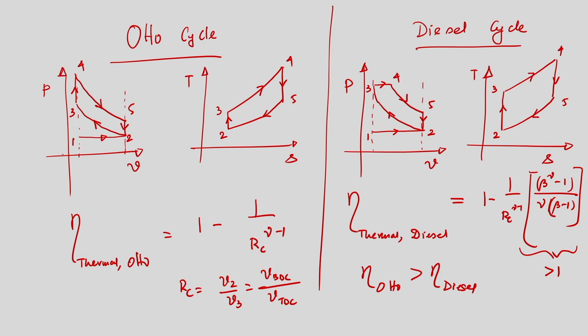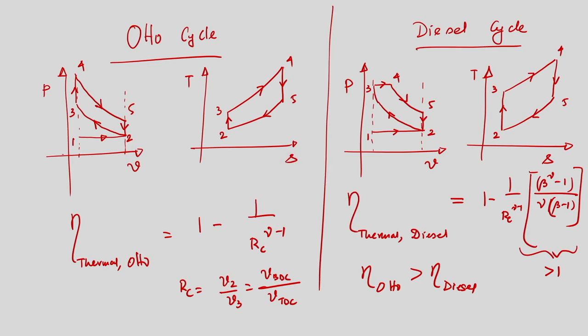Since that quantity is always greater than 1, for a fixed compression ratio the efficiency of the Otto cycle will be higher than the efficiency of the Diesel cycle. Constant volume combustion is more efficient than constant pressure combustion. However, CI engines are operated at a higher compression ratio, so efficiency will be higher for compression ignition engines despite the constant pressure combustion.